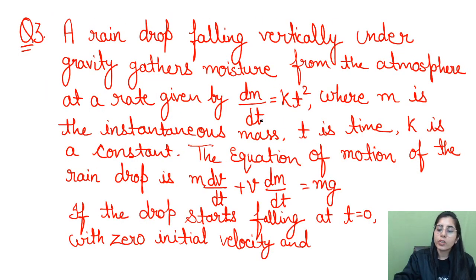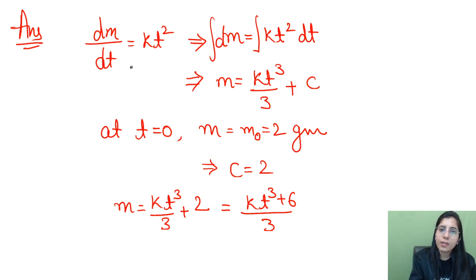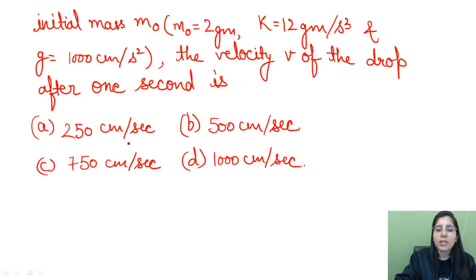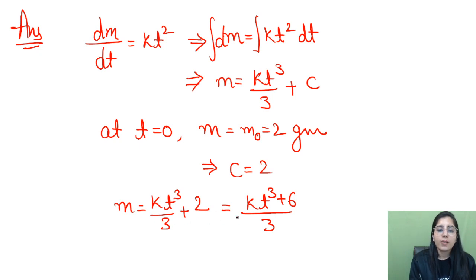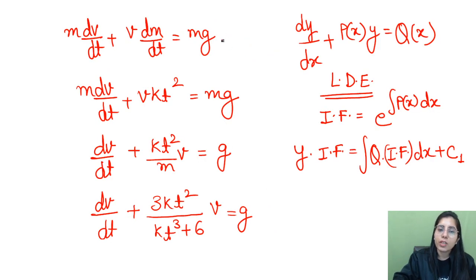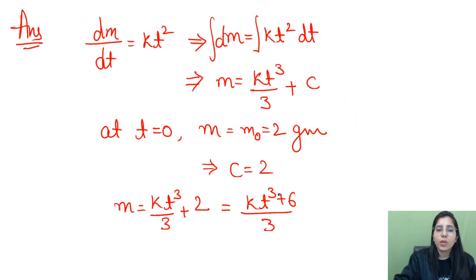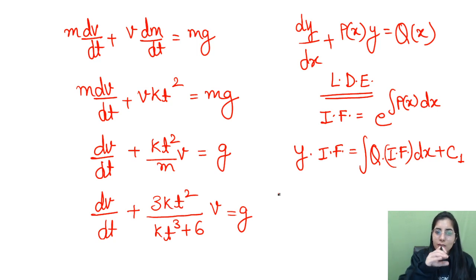Since dm/dt equals kt squared is already given, cross-multiply and integrate: integration of dm equals integration of kt squared dt. After integration you get m equals kt cubed upon 3 plus C. Applying the initial condition — at t equals 0, m equals m0 equals 2 grams — gives C equals 2. Therefore m equals kt cubed upon 3 plus 2, or taking LCM: m equals (kt cubed plus 6) upon 3. Now substitute dm/dt equals kt squared into the equation of motion m dv/dt plus v dm/dt equals mg.